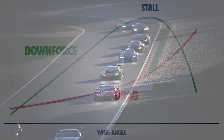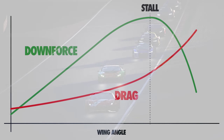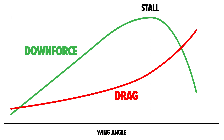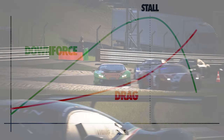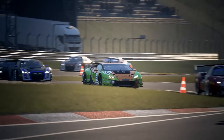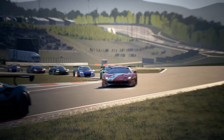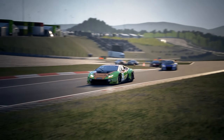As air pressure drag increases, it resists the movement of the vehicle with a greater force. Simply put, more drag means slower acceleration and lower top speeds. So setting the wings on a racing car is all about finding the right compromise between increased grip and therefore faster cornering, and decreased top speed.